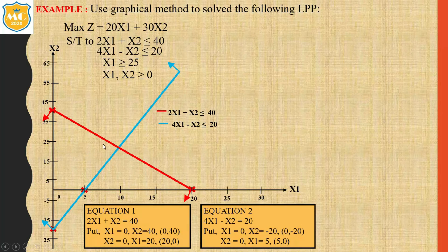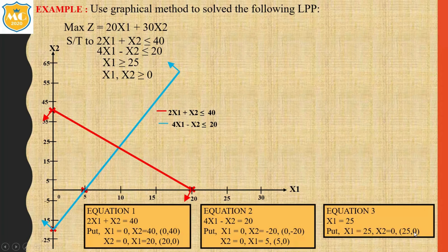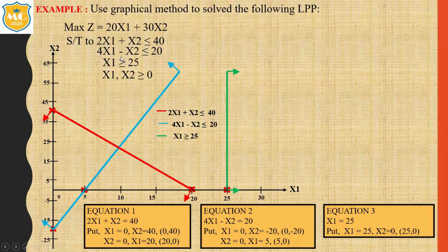Now let's see the third constraint: x1 = 25. Here only the value of x1 matters, so the coordinates are (25, 0) — mark 25 on the x-axis and draw a straight line. The sign is ≥, so this constraint represents away from the origin.